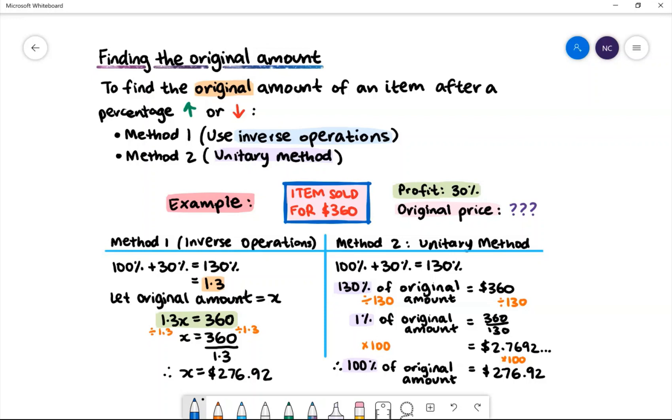Using inverse operations, we can divide both sides by 1.3 to get x equals 360 divided by 1.3. Therefore, the original amount equals $276.92.